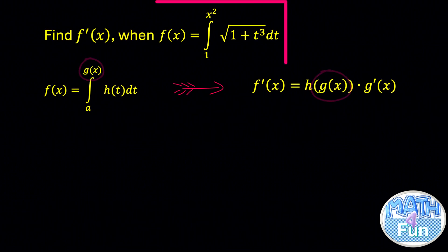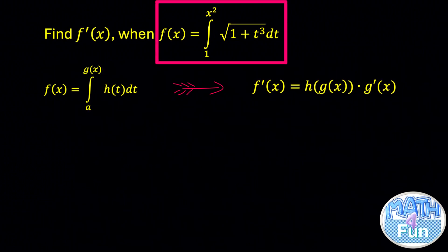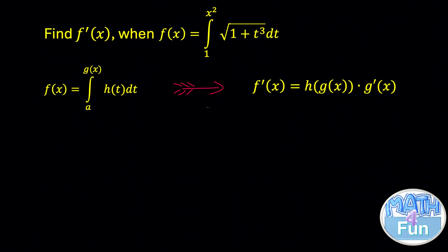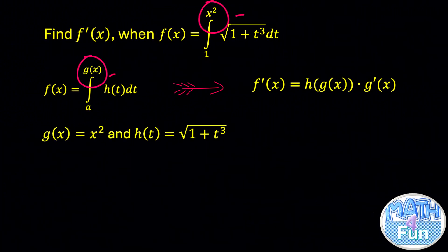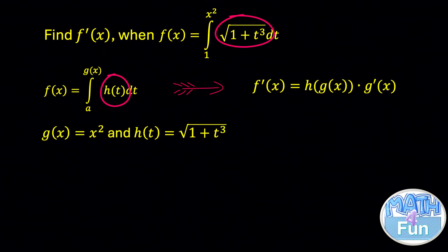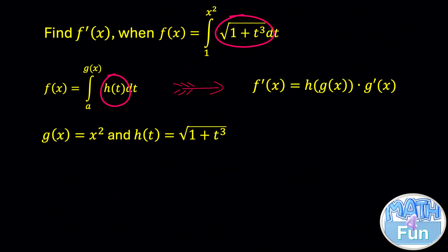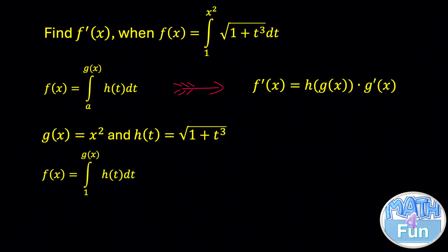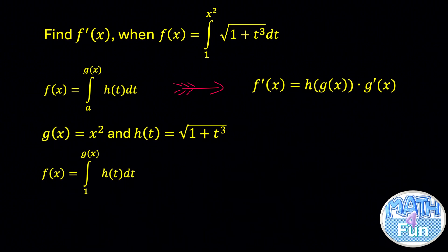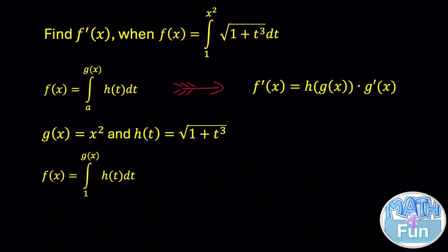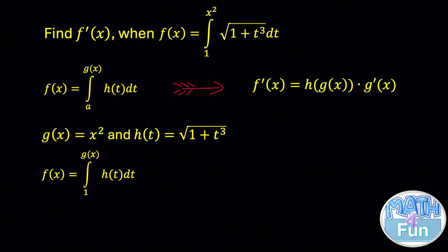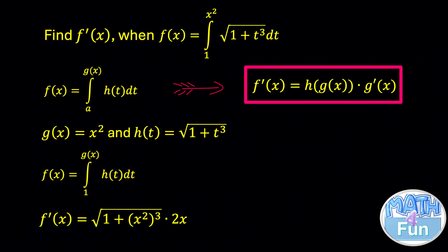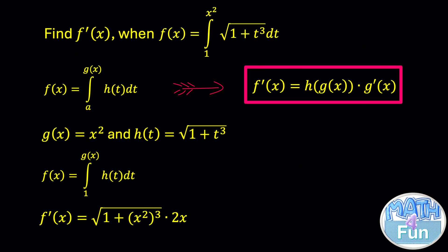We have f of x equal to the integral from 1 to x squared of radical 1 plus t cubed dt. Let's set g of x as x squared and h of t as radical 1 plus t cubed. Then f of x can be written in the form of the integral from 1 to g of x of h of t dt. Applying the fundamental theorem of calculus, f prime of x would be equal to h of g of x times g prime of x.